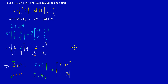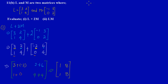Now let's look at part 2, which is asking us to multiply L times M. That was part 1, and this is part 2 — let's split the screen a bit.